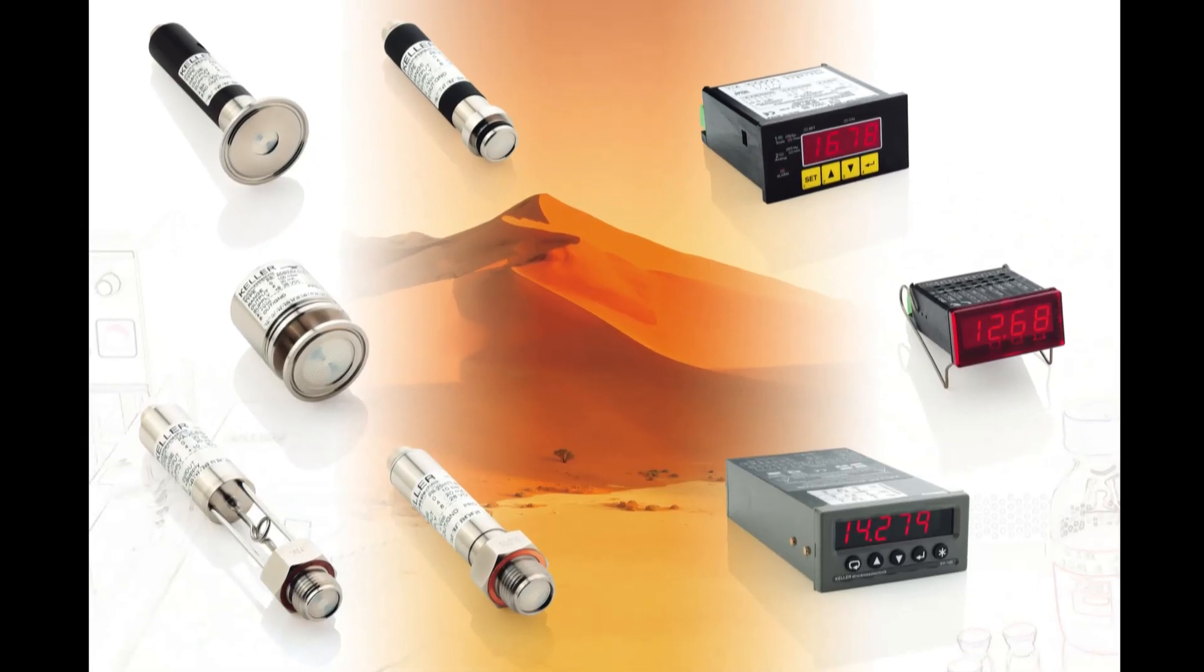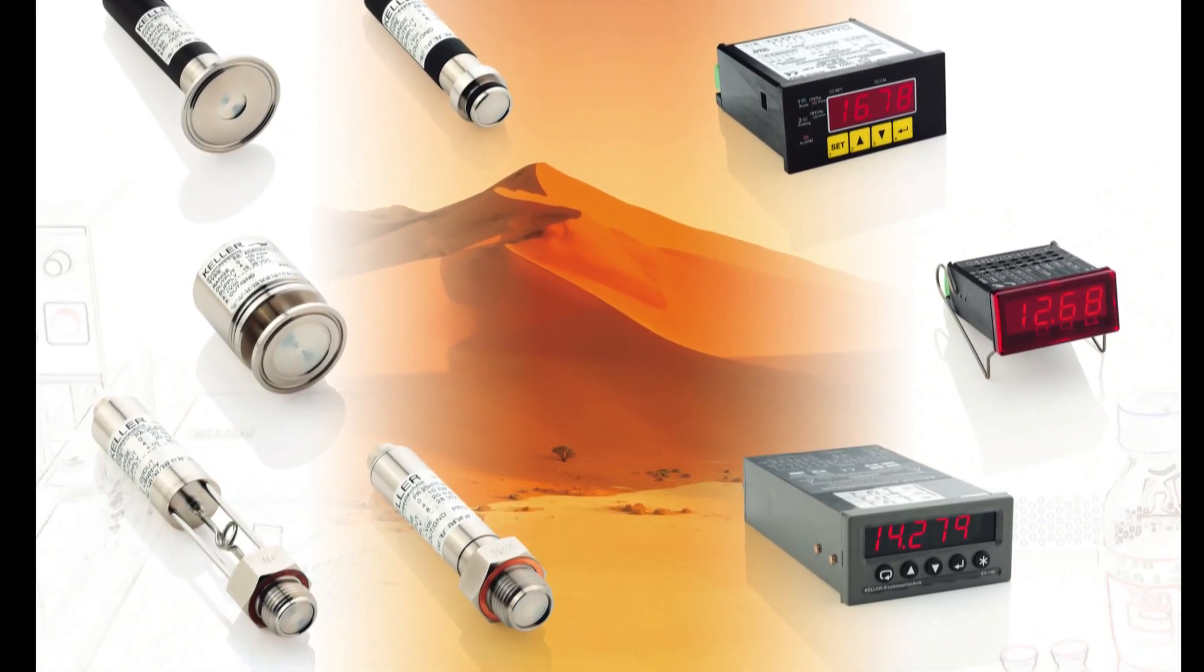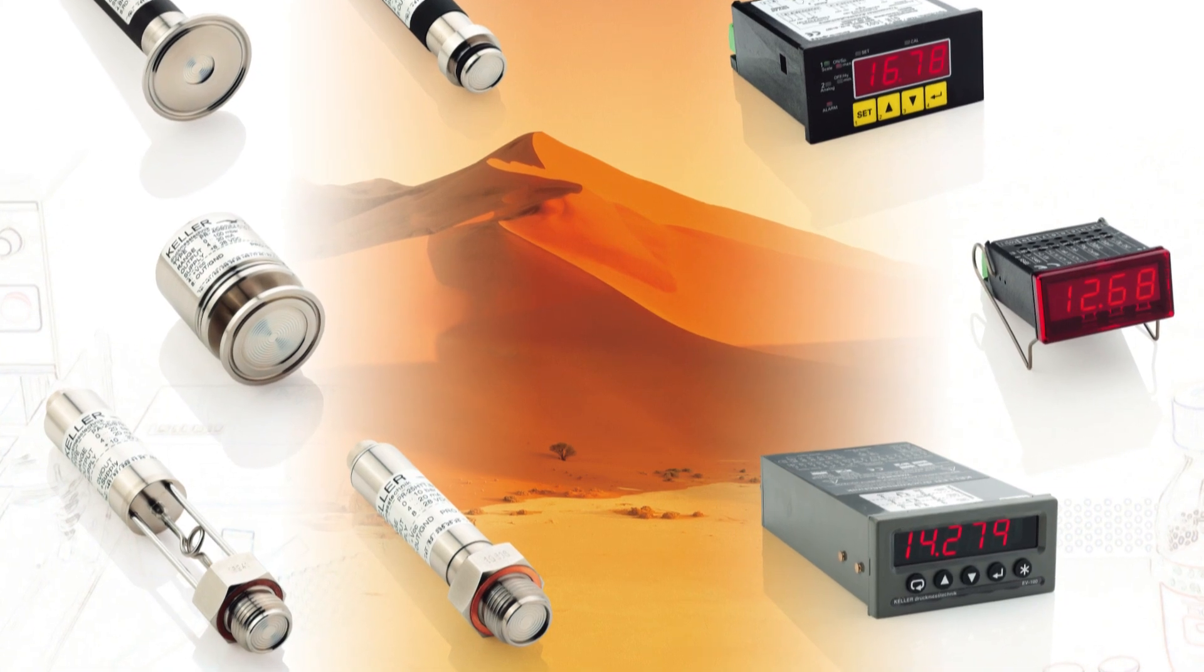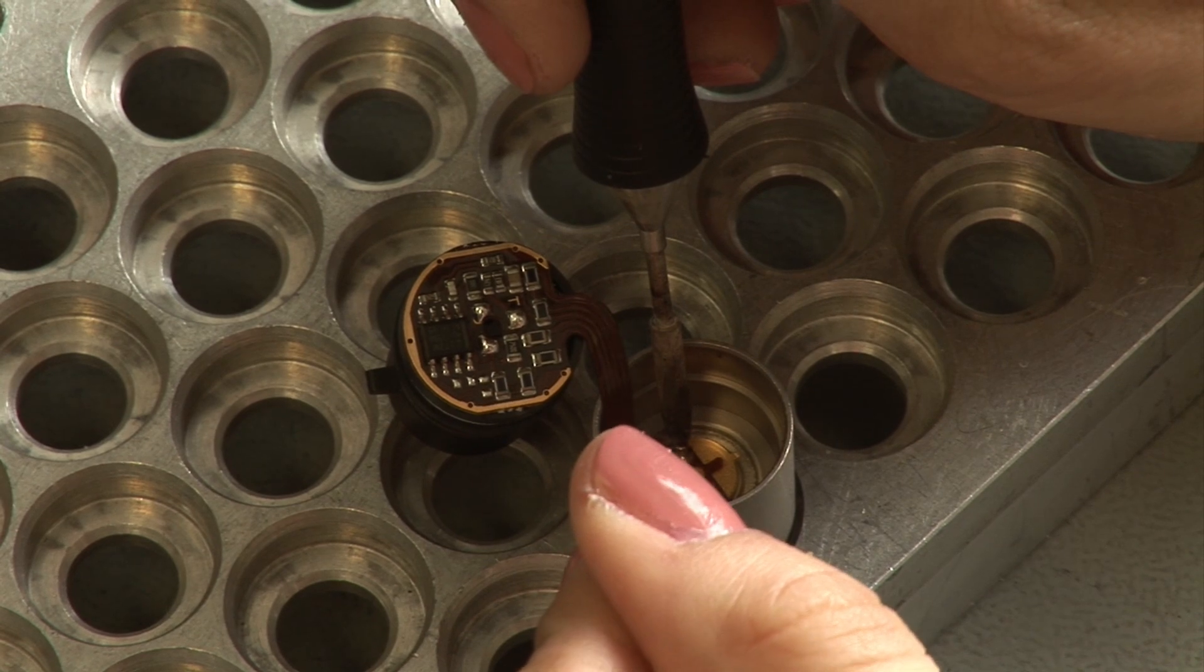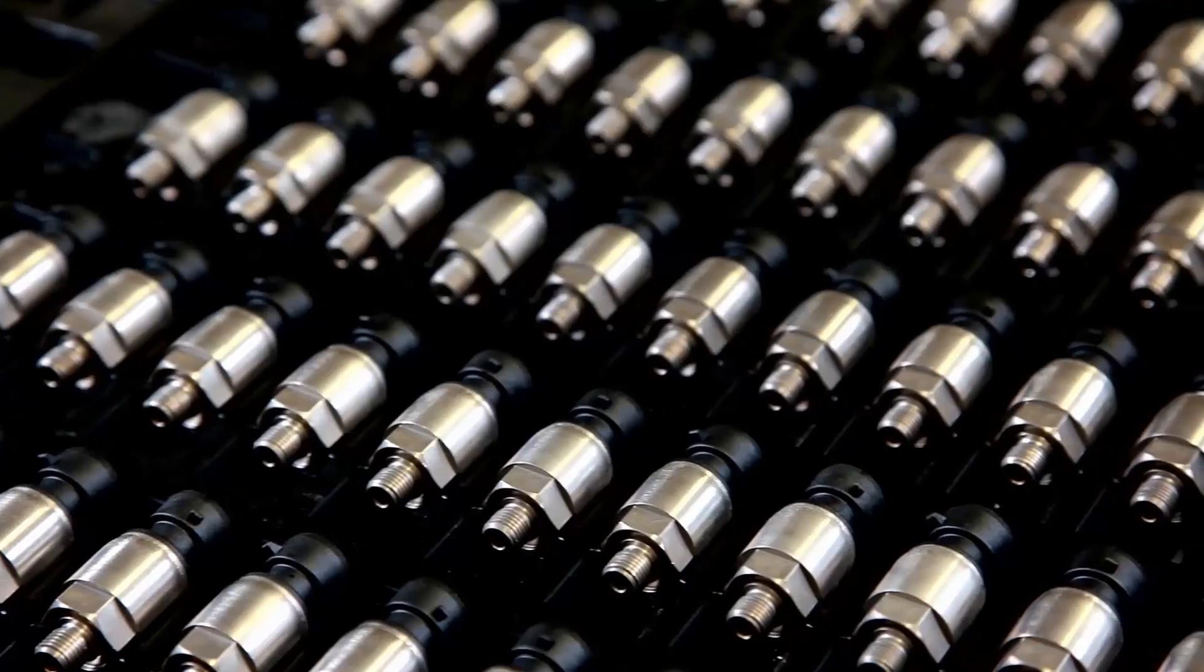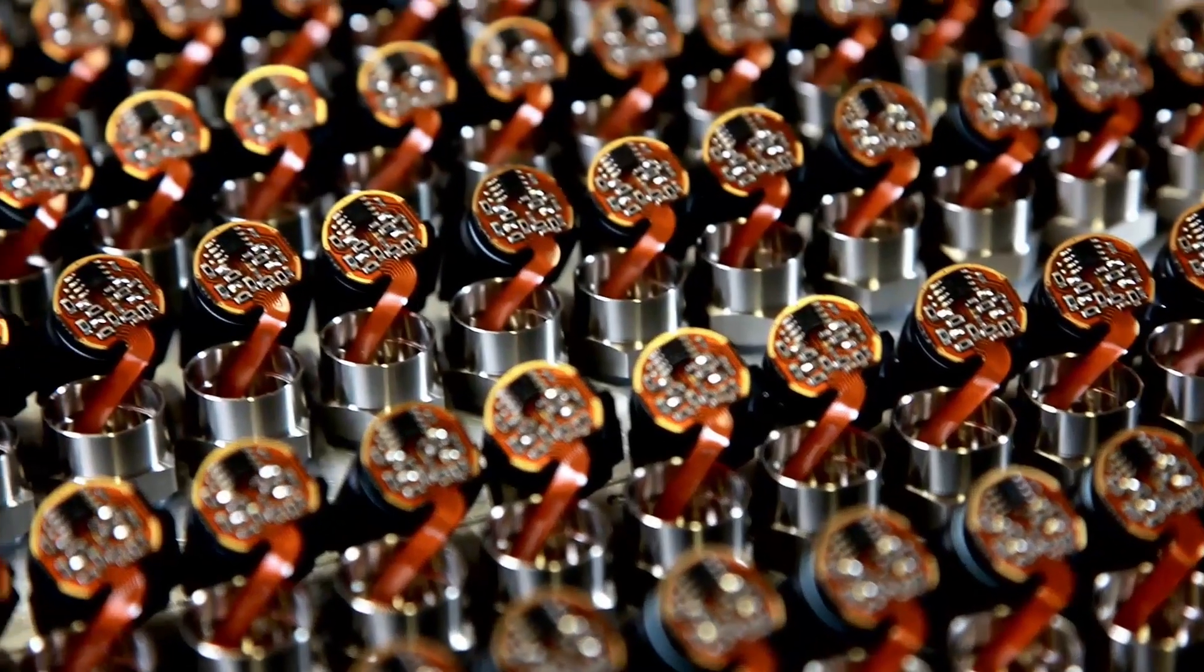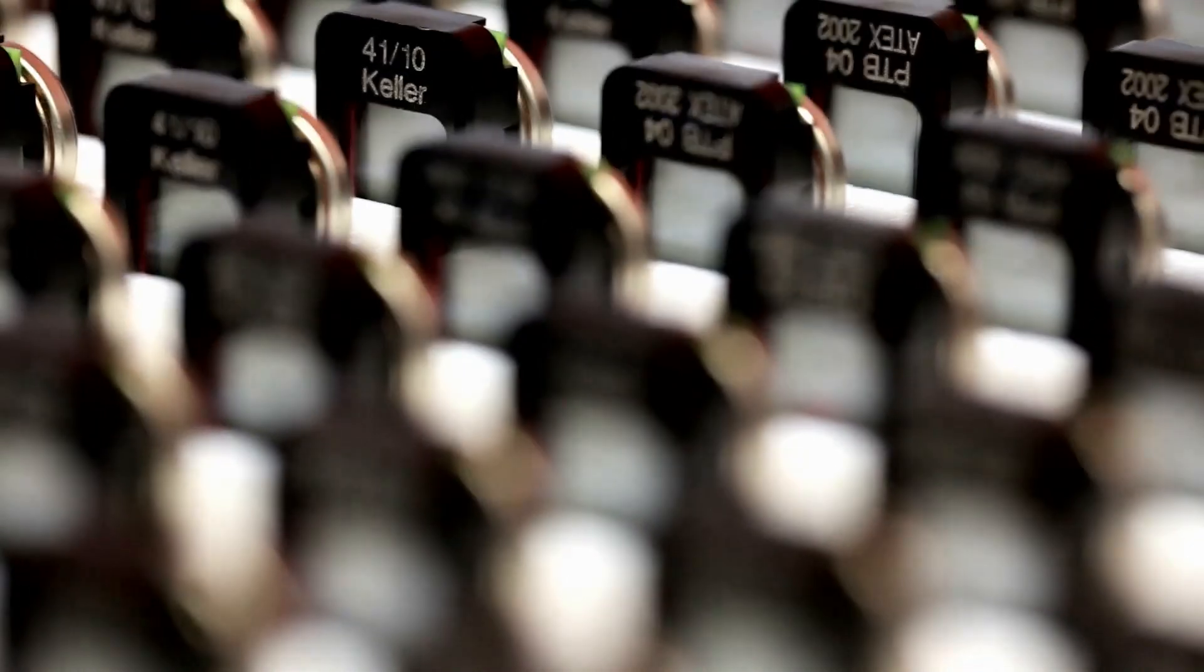Pressure transmitters are another key product sector for Keller. These transmit electronically compensated standard measurement signals. In other words, a pressure transmitter is an enhanced type of pressure transducer which allows the user to carry out highly precise measurements with little technical outlay.